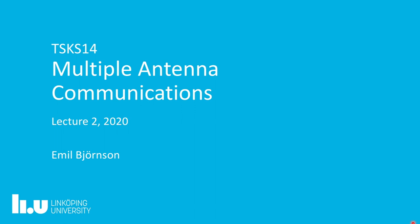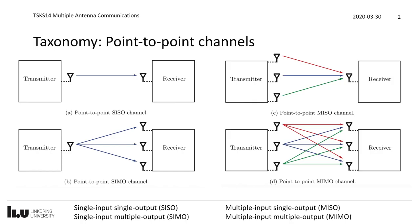Welcome to lecture number 2 in Multiple Antenna Communications at Linköping University. I will start today by talking about the taxonomy of point-to-point channels, that is when we are transmitting from one point to another point, from a transmitter to a receiver. The basic setup considered in the previous video was the point-to-point SISO channel, where SISO stands for single input, single output — one transmit antenna and one receive antenna. In multiple antenna communications there are several other setups that we will consider.